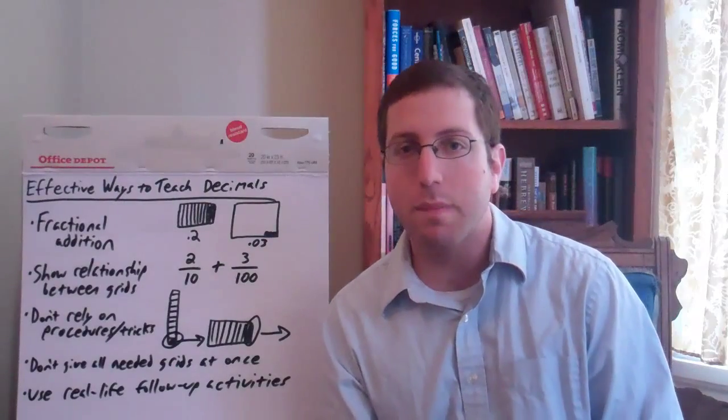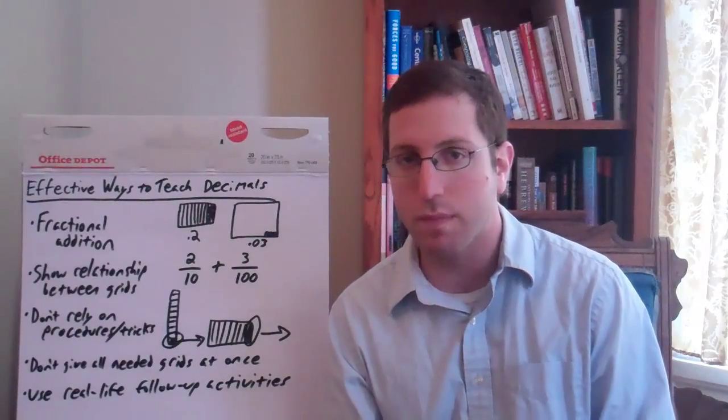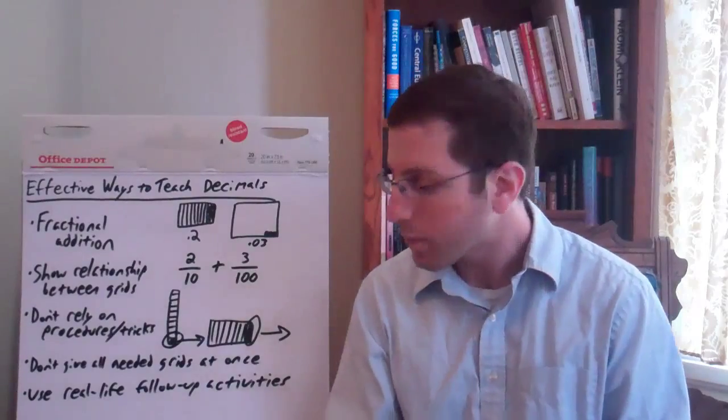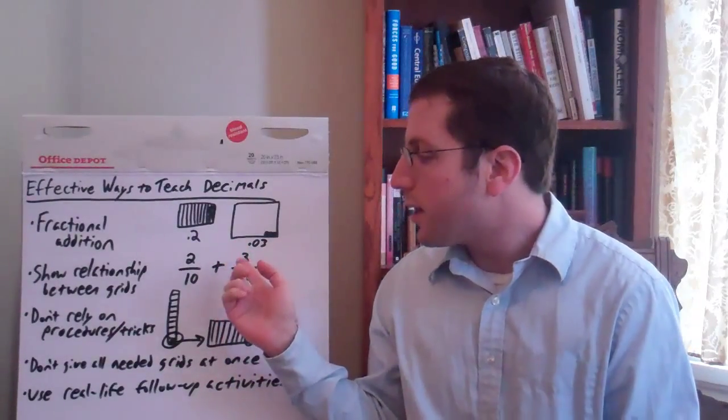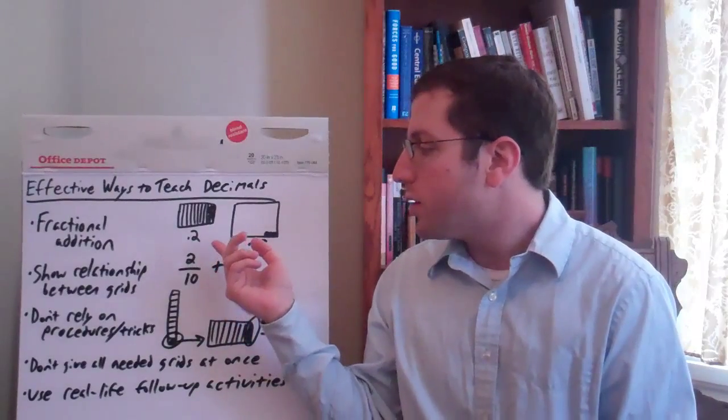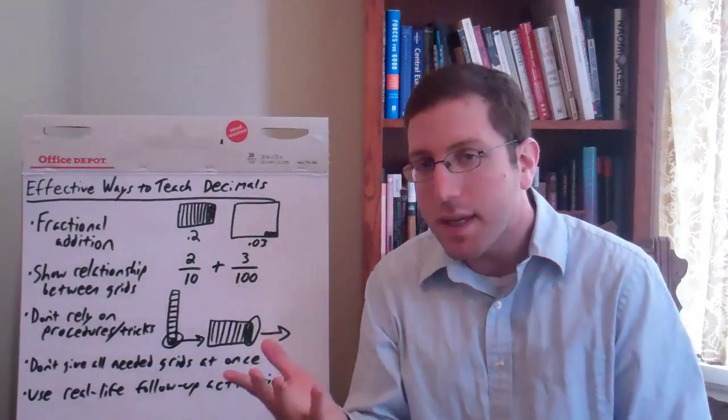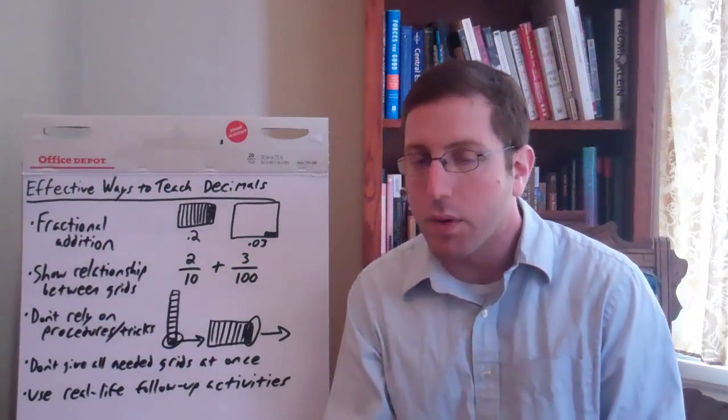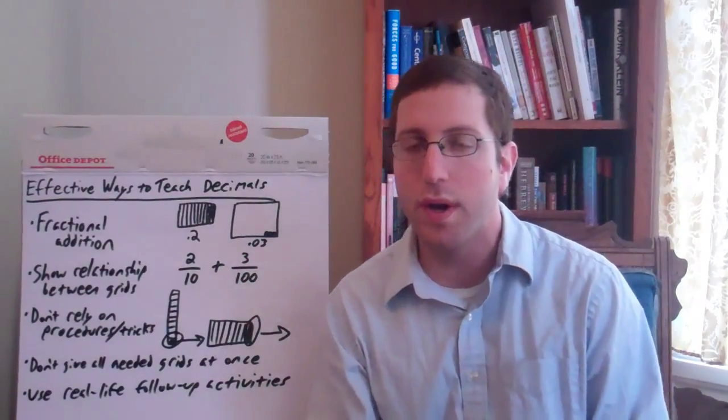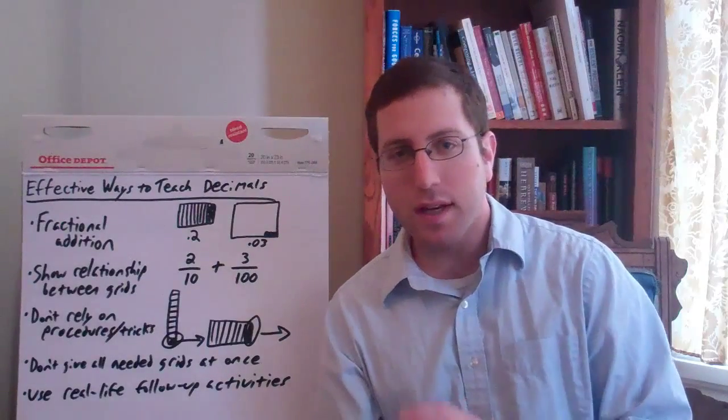Also, when you're talking about comparing or ordering decimals, which can be very difficult for students, being able to see two tenths plus three hundredths compared against just two tenths, that's pretty easy to see, right? Two tenths plus three hundredths must be bigger because there's just more there. But when you give students 0.2 and 0.23, they can often get confused.